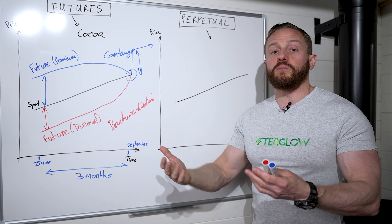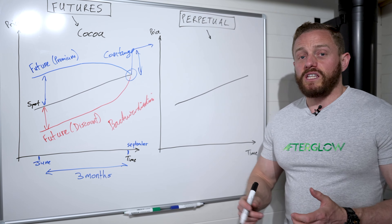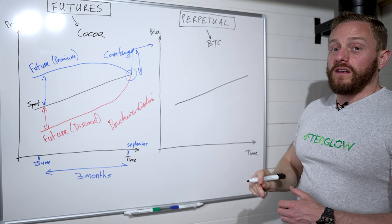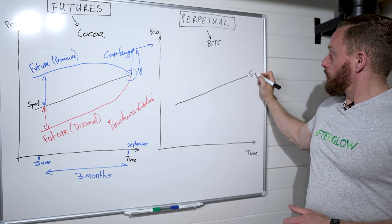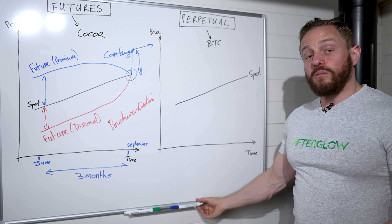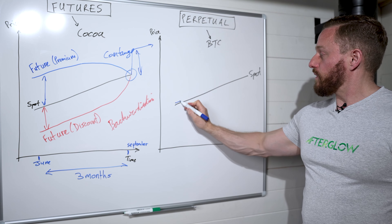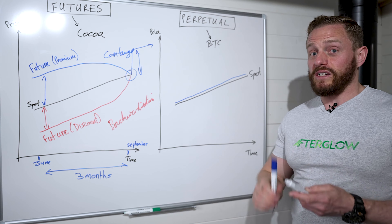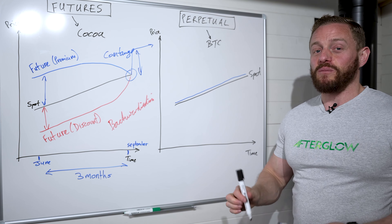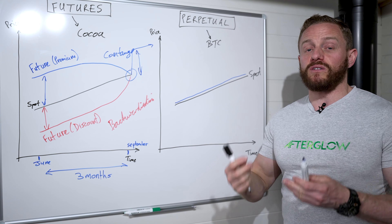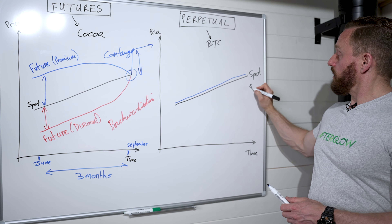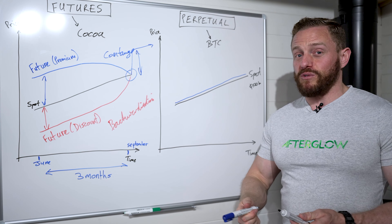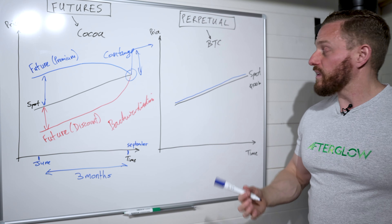To illustrate, let's take Bitcoin perpetual futures. This is the upward sloping spot price, and the perpetual contract is designed to keep the futures price as close to the spot price as possible. The challenge here is leverage — if a trader had a hundred thousand dollars of capital, they could only buy a hundred thousand of spot Bitcoin.